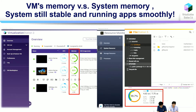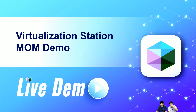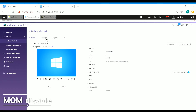Now we can see the VMs' memory versus system memory. I created three VMs with a total of 12 gigabytes of memory — that's over-committing my system memory, which is only 7.7 gigabytes. But the actual usage is only 16%, so the system feels stable and runs applications smoothly. I can open a Firefox browser. We have prepared the first demo for you and Kelvin will explain all the processes.